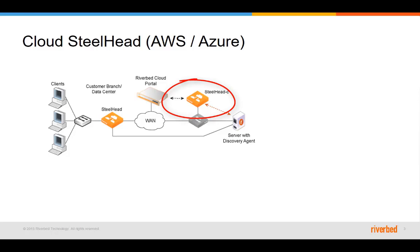The Steelhead in the cloud has the following characteristics. This Steelhead is deployed manually. In AWS it can be deployed using the Riverbed cloud portal or manually from the AWS console. In Azure it can only be deployed using the Azure portal. This is an out-of-path Steelhead with no in-path interfaces.